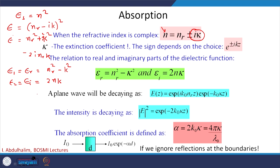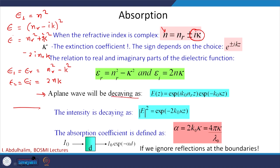If a plane wave is incident on a dielectric-metal interface, the field decays exponentially and the intensity decays as E². To quantify how much light gets absorbed, we define an absorption coefficient α. In a simple experimental setup, you shine light of incident intensity I₀ on an absorbing medium and measure I. The result is I = I₀·exp(−αd), which is the Lambert-Beer law.